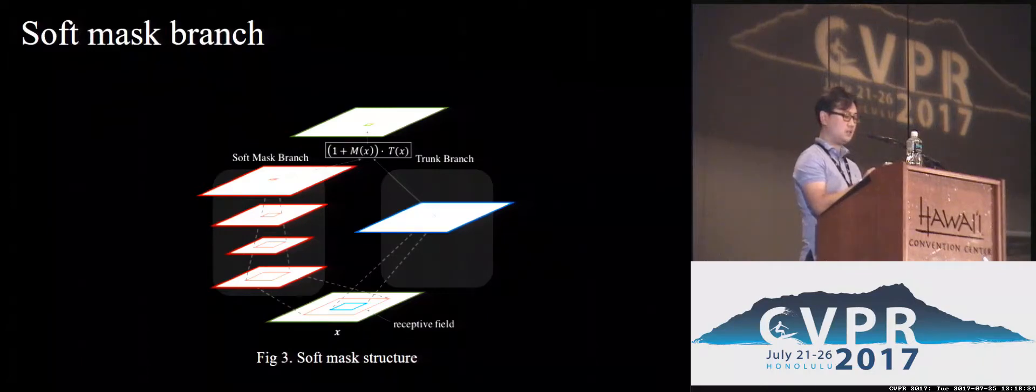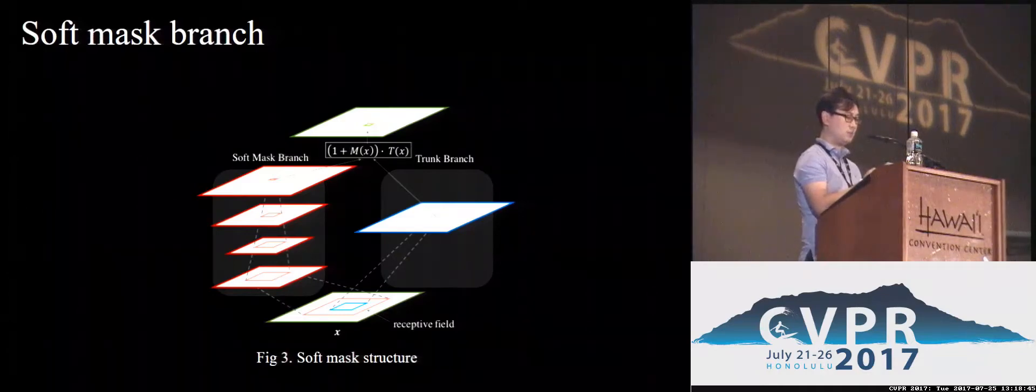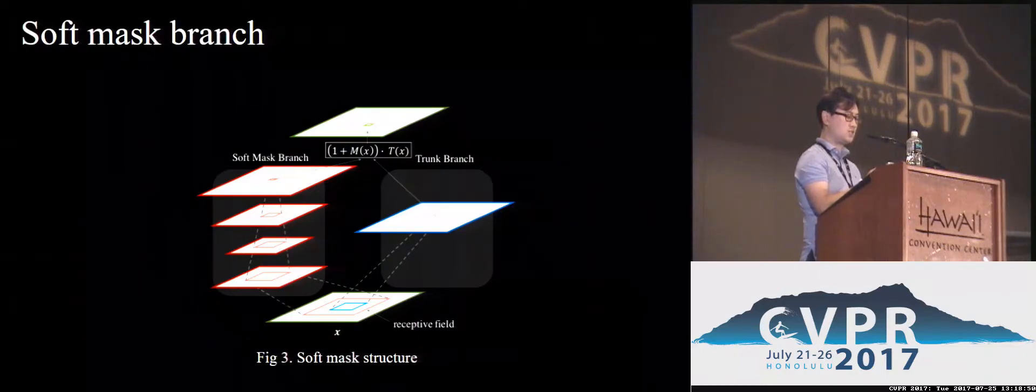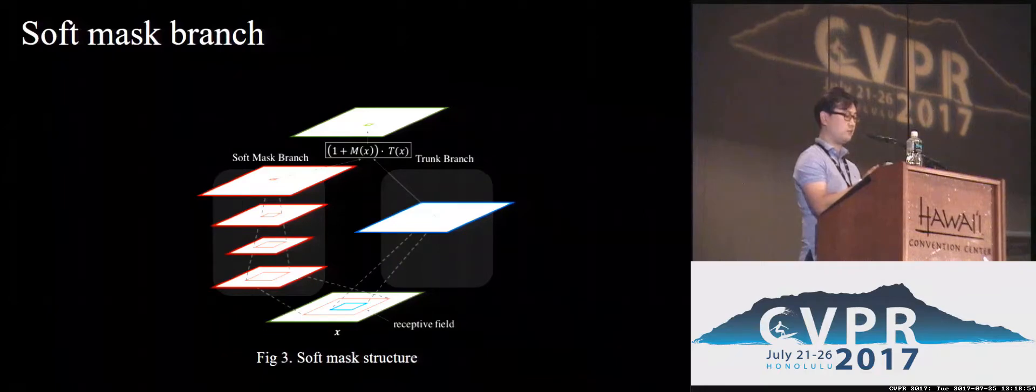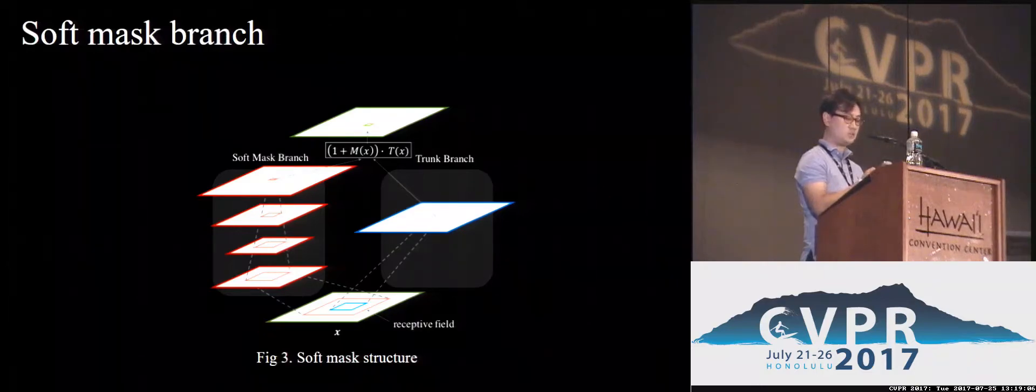Our mask branch contains fast bottom-up feed-forward sweep and top-down feedback steps. In the bottom-up structure, max pooling is performed several times to increase the receptive field rapidly, after a small number of residual units. After reaching the lowest resolution, the global information is then expanded by a symmetrical top-down architecture to guide the trunk features in each position. We have conducted experiments comparing with local convolution without any down-sampling. The bottom-up top-down structure outperforms local convolution by a large margin.